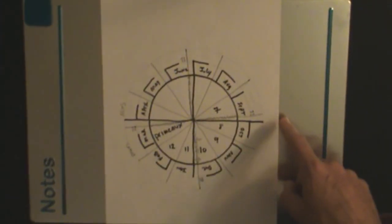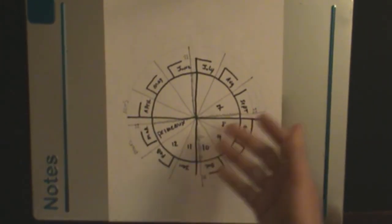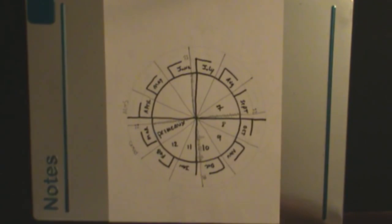These solstices and these equinoxes, and this solar cross is the cross of Christianity. It's also the ankh, the Egyptian ankh. It's the Native American medicine wheel. It's the Celtic cross. It's actually just about every cross you've ever seen in your life comes from this.